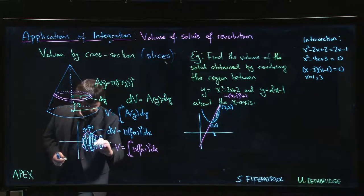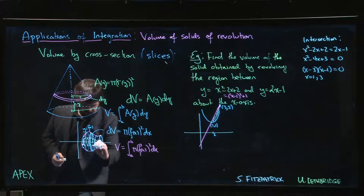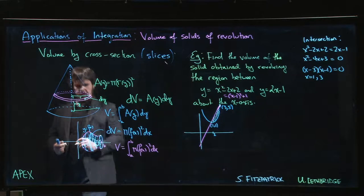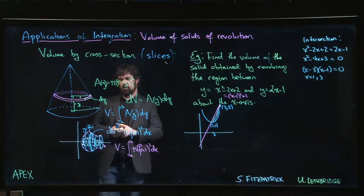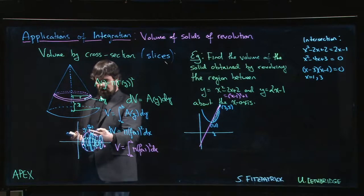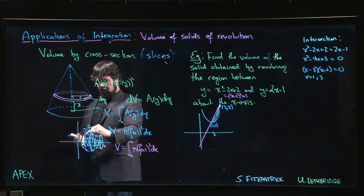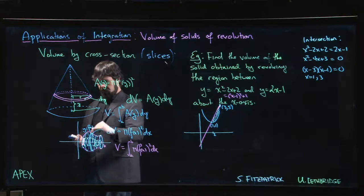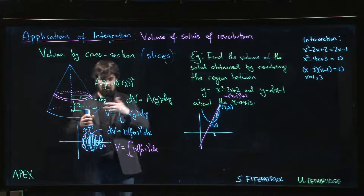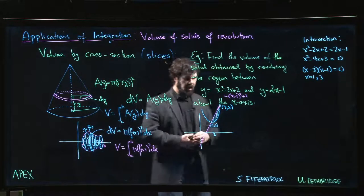And when that one goes around, what happens is you're kind of cutting a piece out from the middle. So now what you're going to get is the region that is bounded outside by that curve in red and then inside by that curve in white. So you're cutting a piece, you're sort of drilling a piece out from the middle.